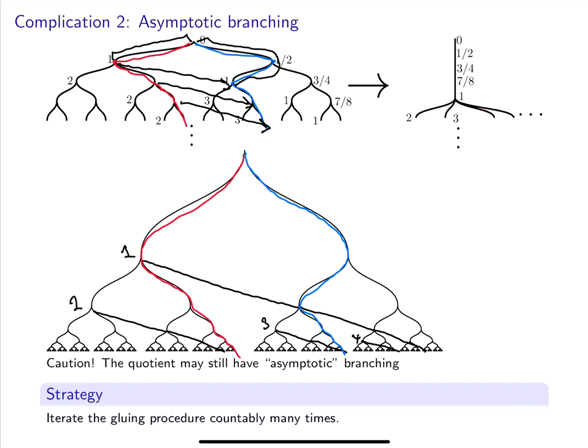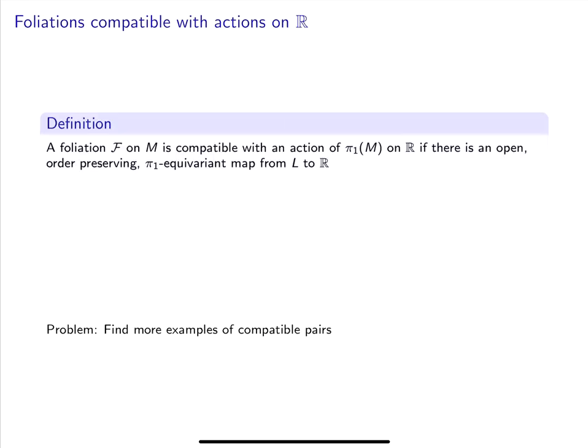I won't give more specifics about the proof because it will involve a bit more setup, but I hope this gives a flavor of the kinds of issues that we encounter. The examples we've explored today motivate the following definition. A foliation F on M is compatible with an action of π₁ on ℝ if there is an open, order-preserving π₁ equivariant map from the leaf space to ℝ. So the picture you should have in mind is that the universal cover of M is getting squashed down to ℝ.